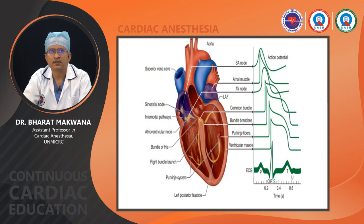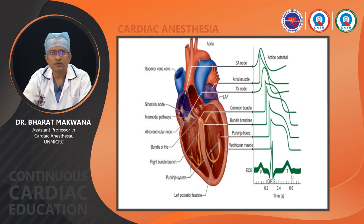This slide shows various pacemaker and conductive fibers: SA node, AV node, bundle of His, common bundle, bundle branches, Purkinje fibers, and ventricular muscle. The highest number of gap junctions is found in Purkinje fibers, so conduction of action potential is very fast there. The lowest number is found in the AV node, so conduction is extremely delayed.